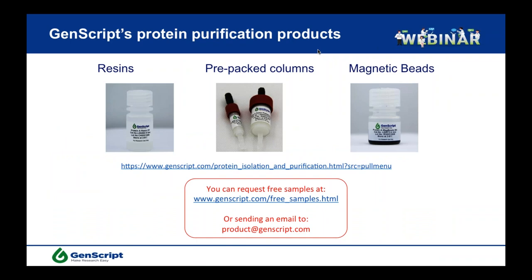Thank you. My name is Jodi Kinghorn, and I'll give a brief introduction to the products we use, which are also available on our website. We have different types of resins, which you can pack in your own columns, pre-packed columns for different resins that are compatible with ÄKTA purification and FPLC, as well as magnetic beads for protein purification for large volumes or high-throughput protein purification. At the link on the slide you can see our protein purification products. If you'd like to try some, you can request free samples or send an email to product@genscript.com.